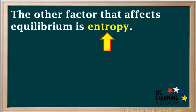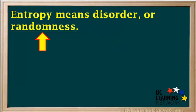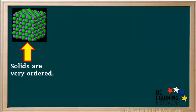Now, enthalpy is not the only factor that affects equilibrium. There's another factor, and it's called entropy. Entropy means disorder or randomness. Let's compare the entropy of different phases of matter. Solids are very ordered — the particles are all in neat rows and they do not move past one another. Because solids have a high degree of order, they have a very low amount of disorder. Therefore, they have low entropy.